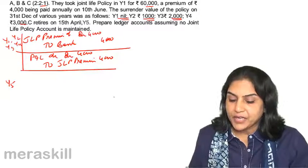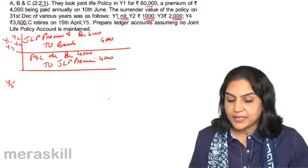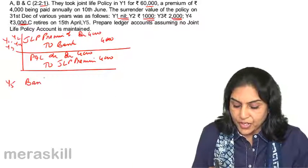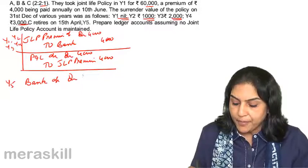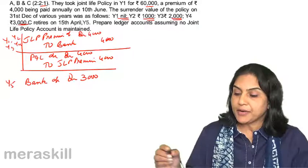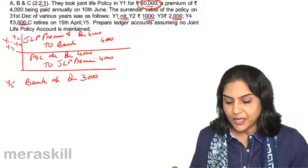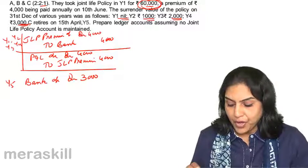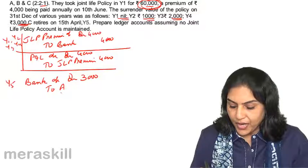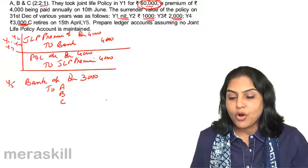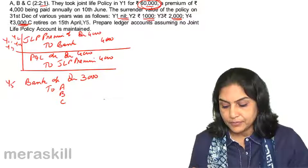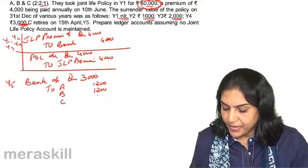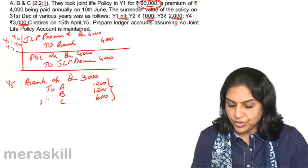Finally, in year 5, C retires and money is received — the surrender value. The surrender value is 3,000. So assuming the surrender value is received: bank account debit 3,000. Mind you, the policy has not matured — if it had matured, we would have received 60,000, which is the maturity value. But we get only 3,000, being the surrender value at the end of year 4. Bank account debit 3,000 is credited to A, B, and C in the profit sharing ratio of 2:2:1 — that is 1,200, 1,200, and 600.